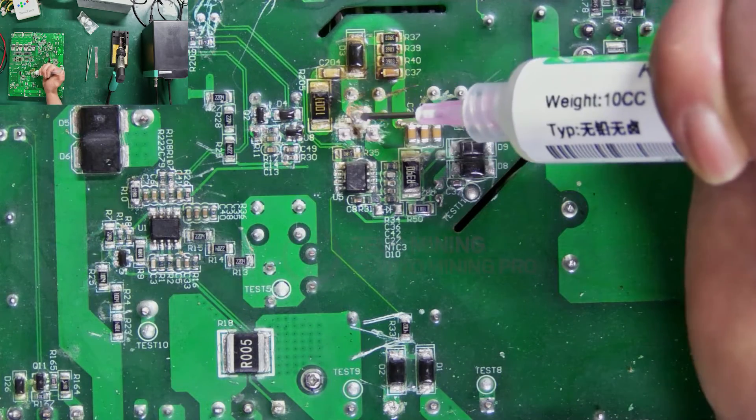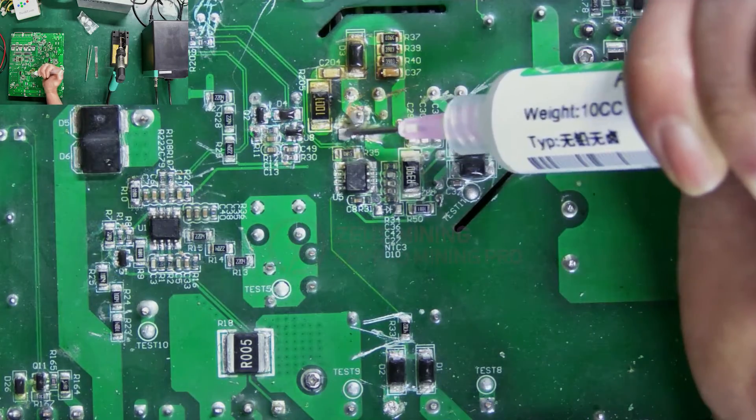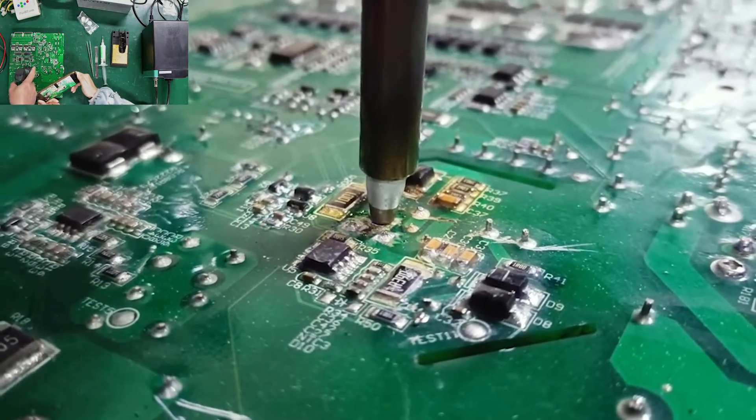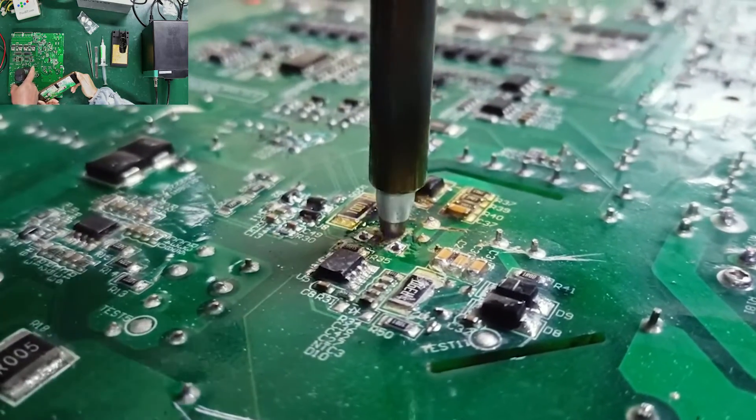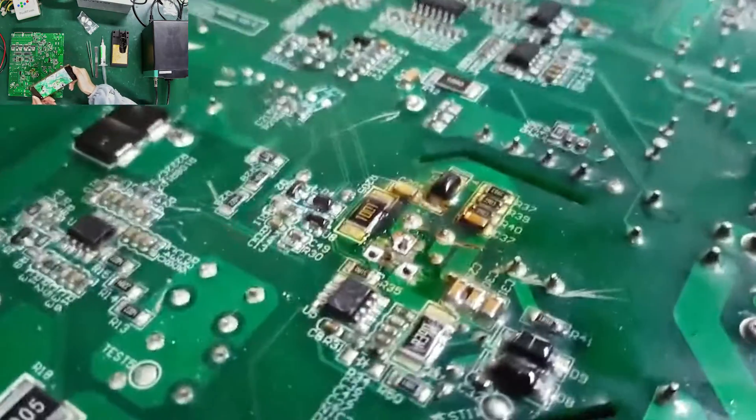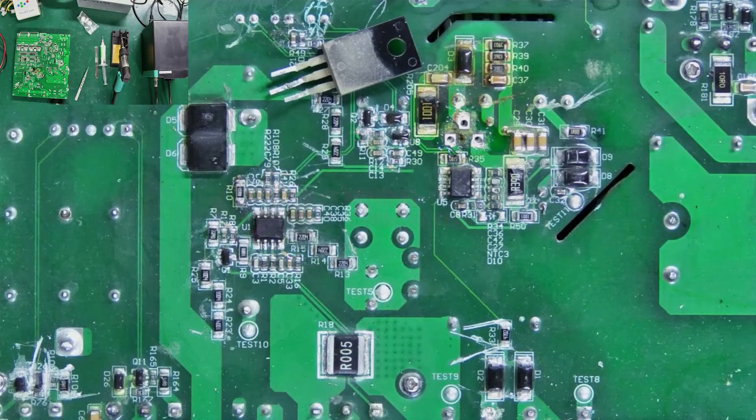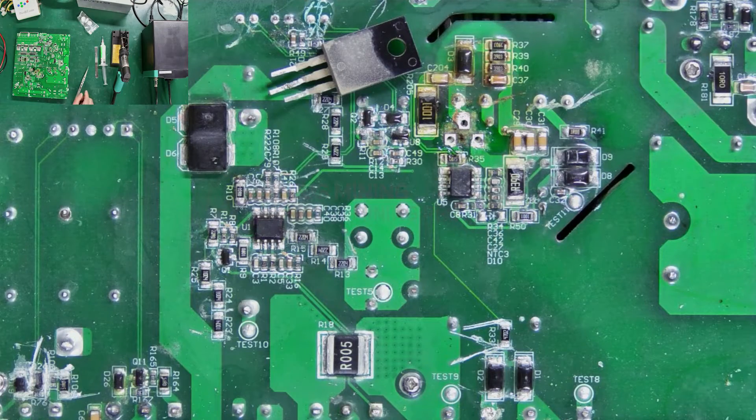Adding flux to the pins can help melt the solder faster. Then start using the desoldering gun to remove the solder. Okay, the MOS tube has been successfully removed.